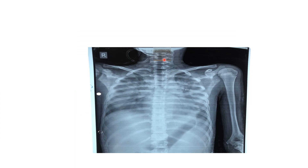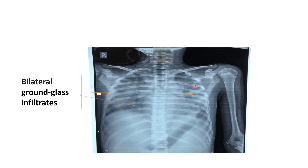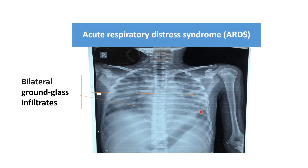In this x-ray, the trachea is in the central position and bilateral lung field opacity is present. This child was around 8 to 10 years old and had bilateral lung field opacity with air bronchogram — bilateral ground glass infiltration present on x-ray. This child was having acute respiratory distress syndrome (ARDS) and was suffering from viral infection.